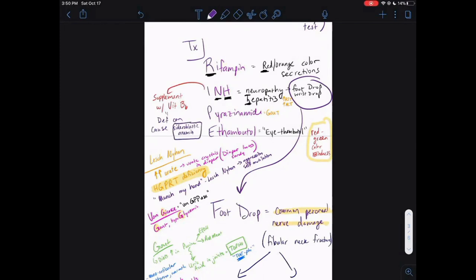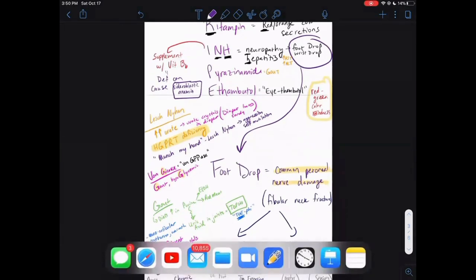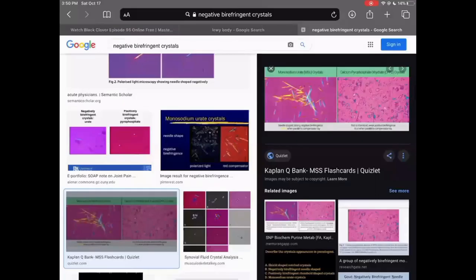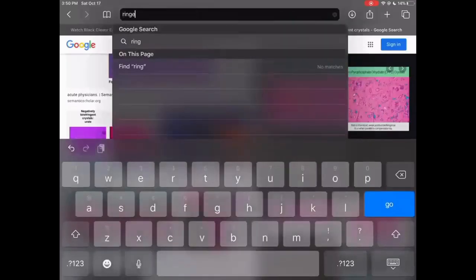So what is sideroblastic anemia? Well, it's basically when you get ringed sideroblasts, which are iron-laden red blood cells, and you're going to have an accumulation of those. Let's look on Google here, and we'll look at a picture of what a ringed sideroblast is.